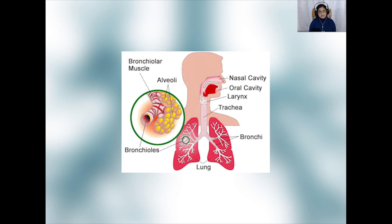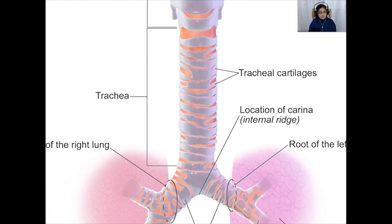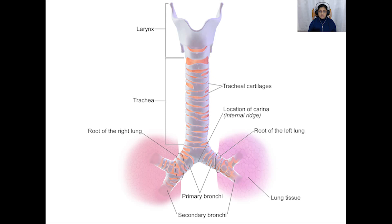It is in the alveoli that gaseous exchange with the blood actually takes place. Now the walls of the trachea and the bronchi contain rings of gristle, or cartilage. These support the airways and keep them open when we breathe in. If the cartilage collapses for some reason, your trachea closes in on itself and you would suffocate. So cartilage is what holds your windpipe open to allow you to breathe.